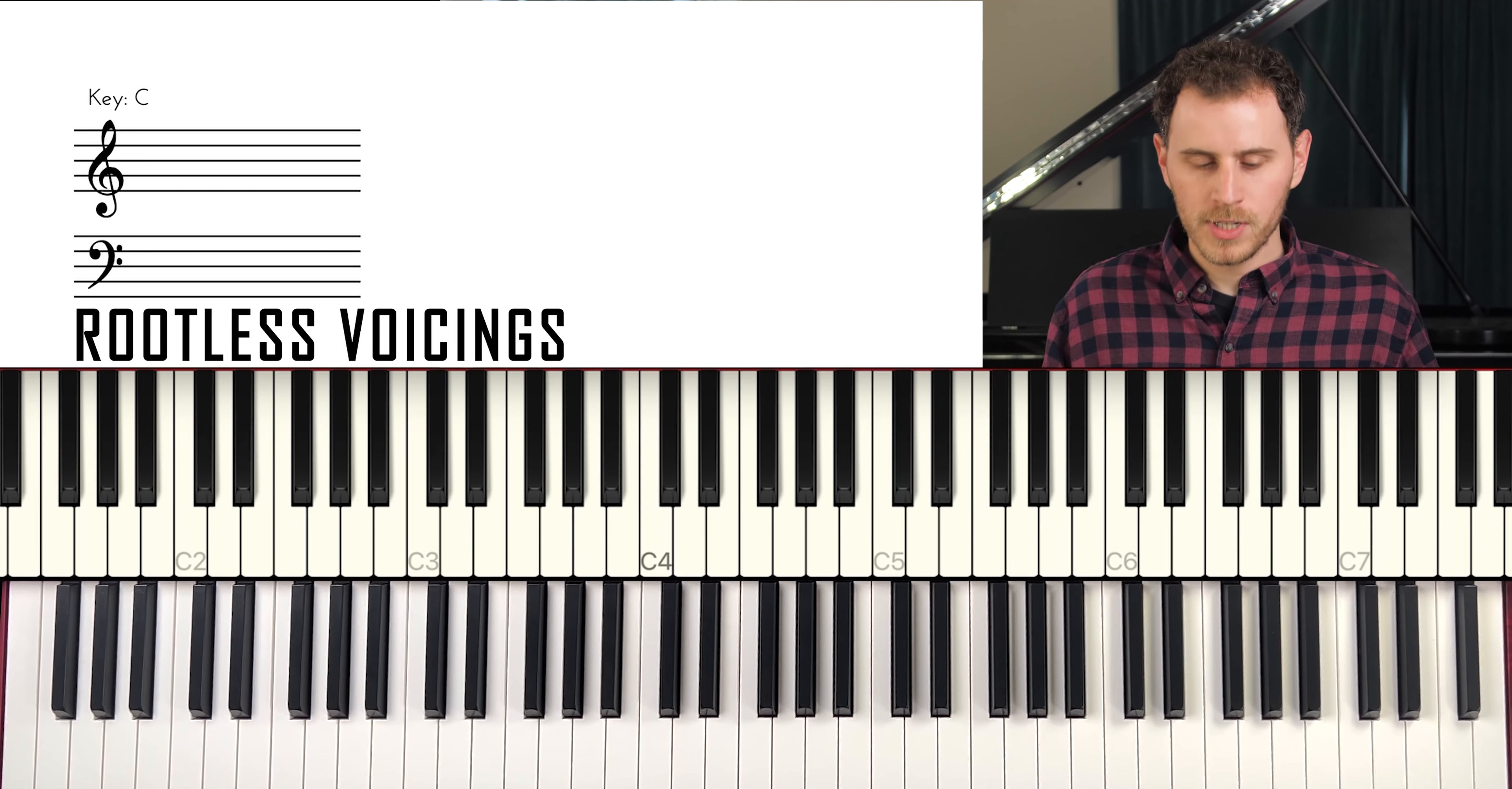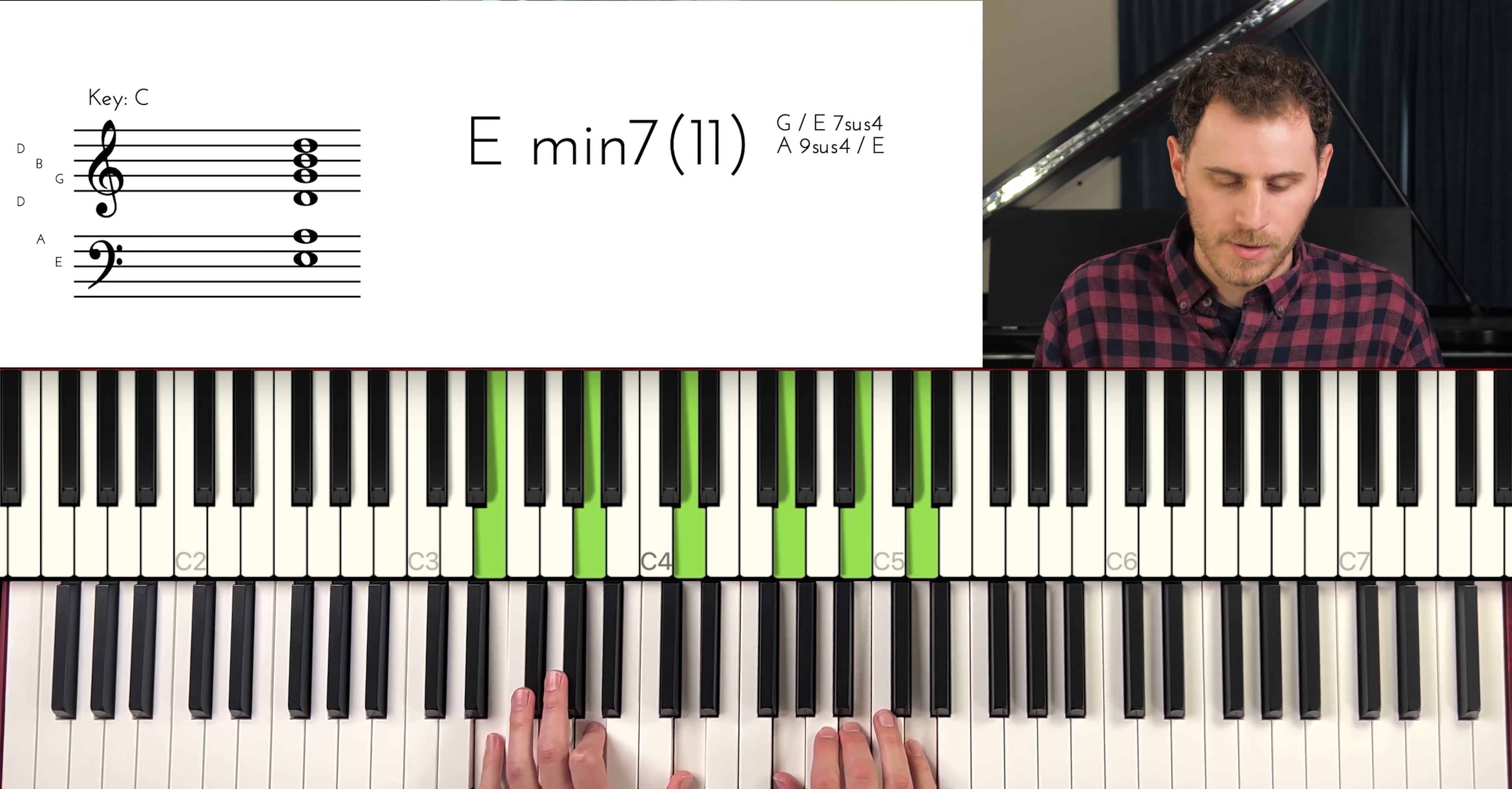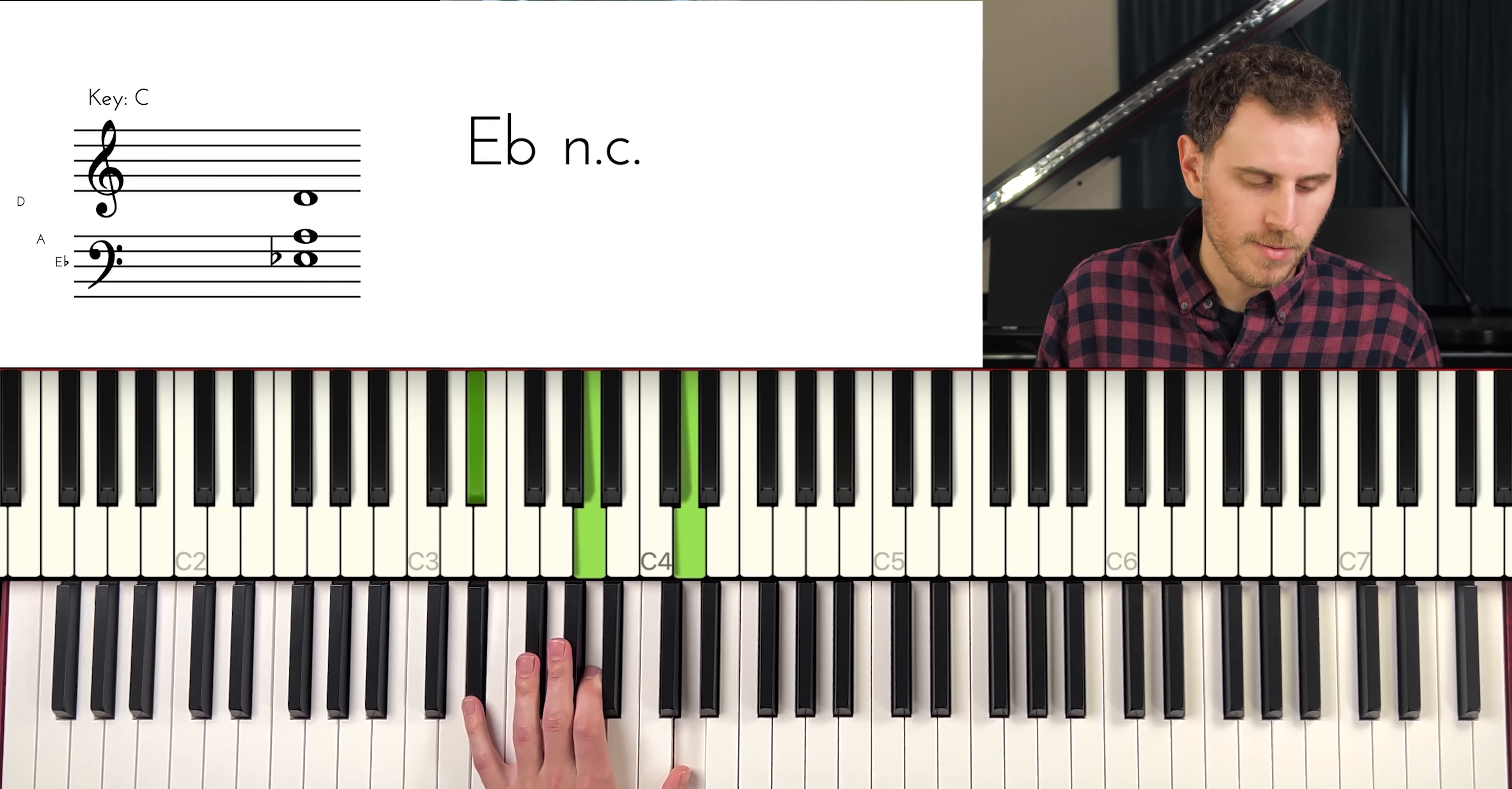Now, what if we were talking rootless voicings? Well, there are also some fairly common shapes with rootless voicings. You might have a fourth. You might actually have a series of fourths. These are very common. These are kind of like so what voicings. So if you can get that left hand, do you have a fourth? Do you have, this is a very common shape. Do you have a tritone on bottom?